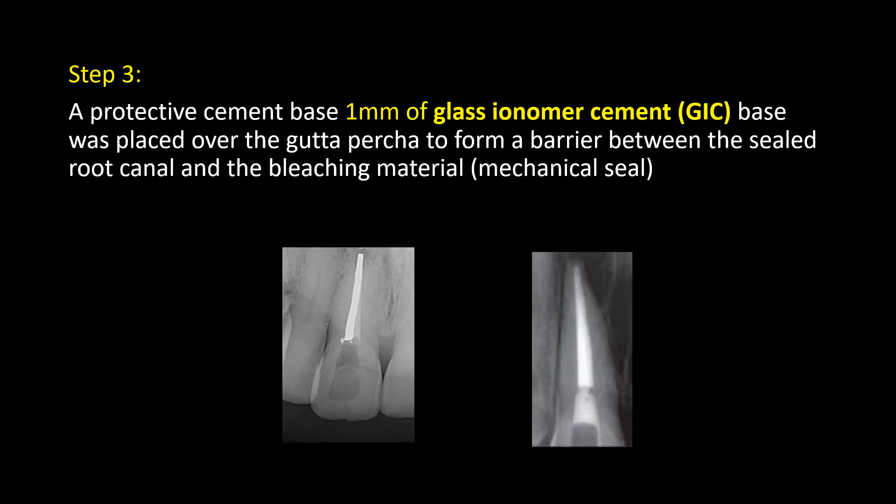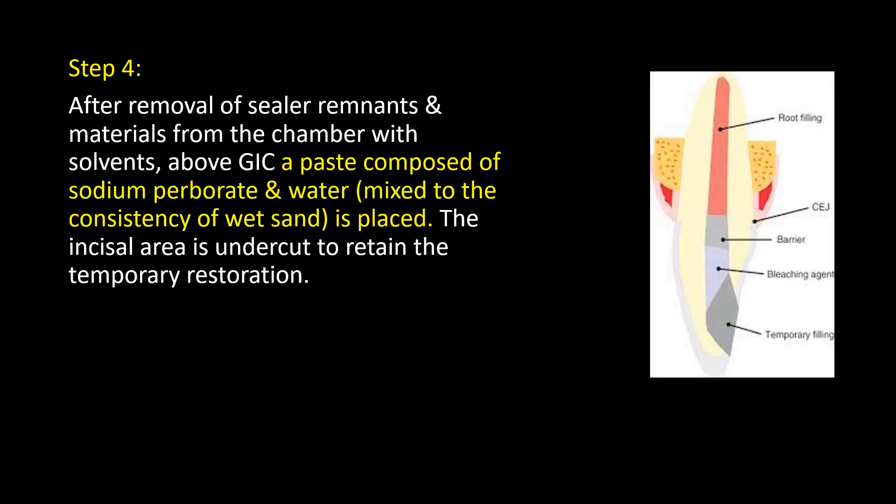Step 3 — A protective cement base of 1 mm of glass ionomer cement is placed over the gutta-percha to form a barrier between the sealed root canal and the bleaching material, providing a mechanical seal. Step 4 — After removal of sealer remnants and materials from the chamber with solvents, a paste composed of sodium perborate and water, mixed to the consistency of wet sand, is placed.